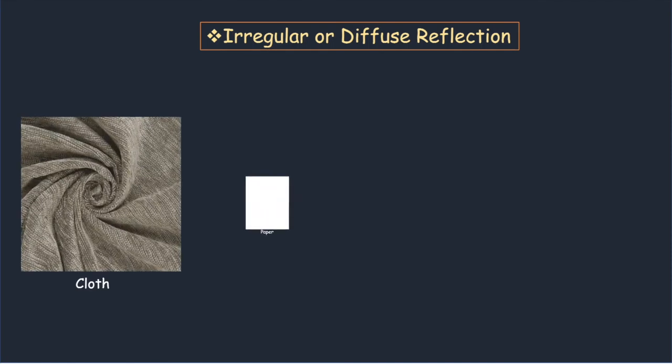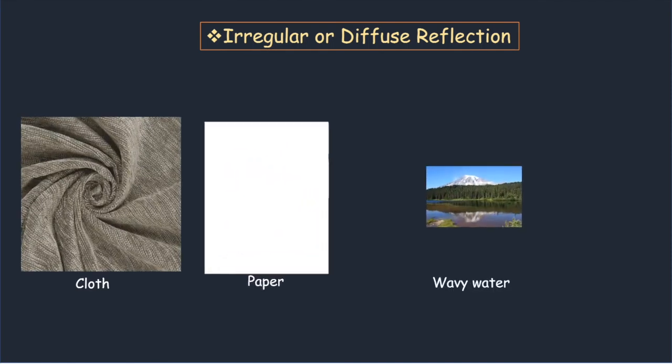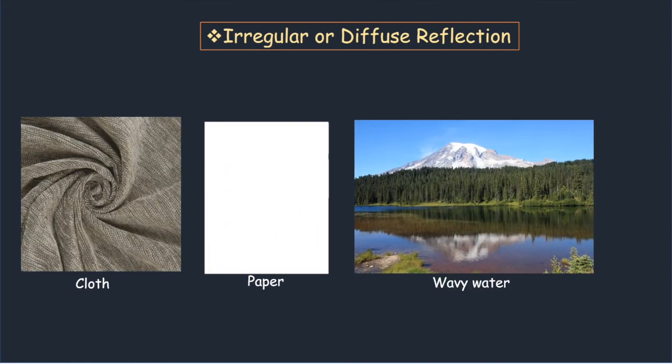Reflection from rough surfaces such as cloth, paper, and wavy water leads to a type of reflection known as diffuse reflection.